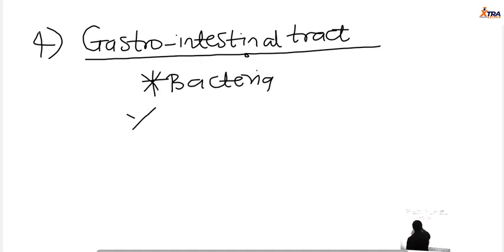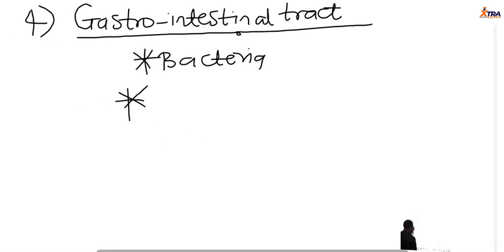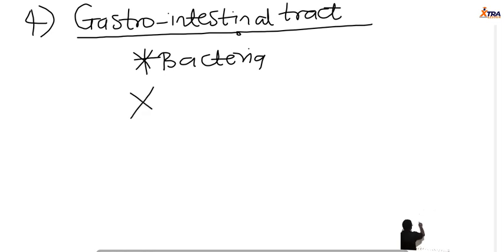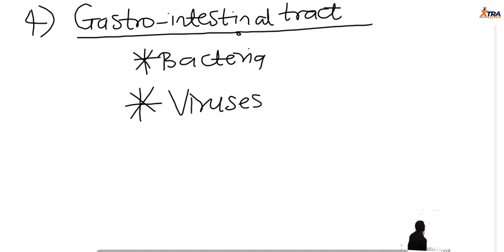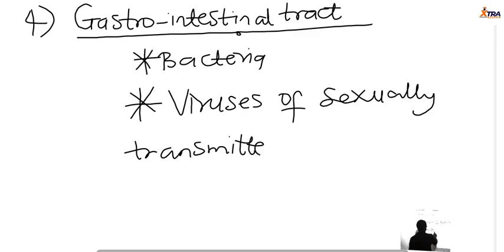In terms of viruses, most STDs — sexually transmitted diseases — like Epstein-Barr virus, human papillomavirus, gonorrhea, herpes simplex, and chlamydia trachomatis — those pathogens and viruses of sexually transmitted disease infect the body via the genital urinary tract, not actually through the gastrointestinal tract, although there is some communication between the GI and the urinary tract.